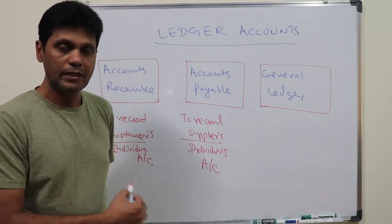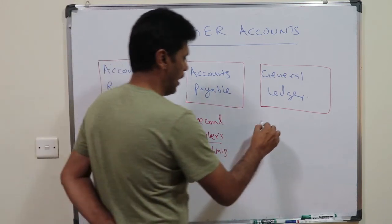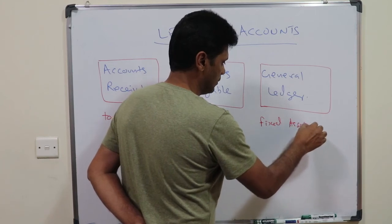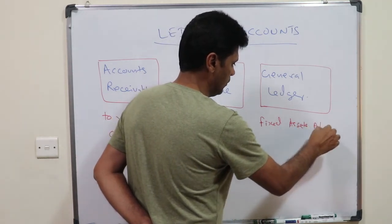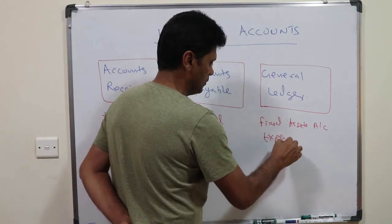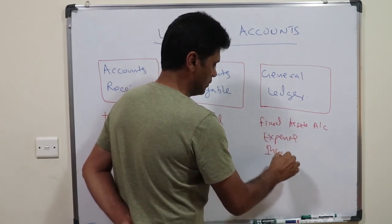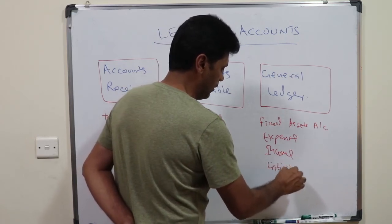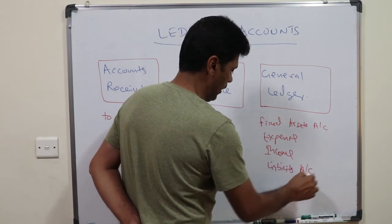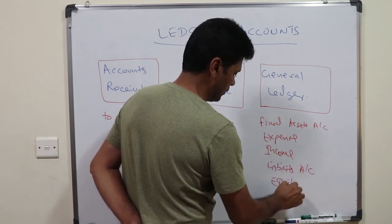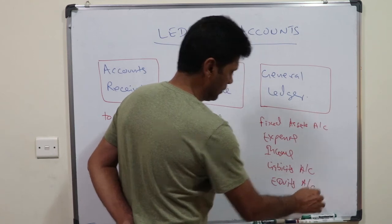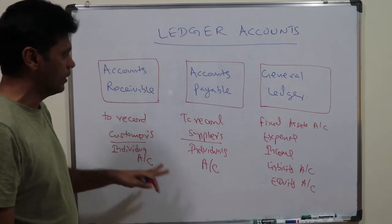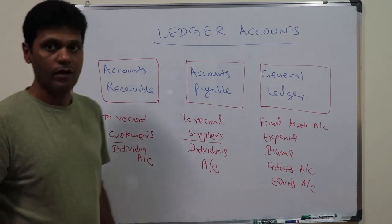Other than customers' and suppliers' individual accounts, all other ledger accounts will be maintained in the general ledger. The types of accounts maintained in the general ledger include fixed assets accounts, expense accounts, income accounts, liability accounts, and equity accounts. These are the different types of accounts recorded in the different types of ledgers.